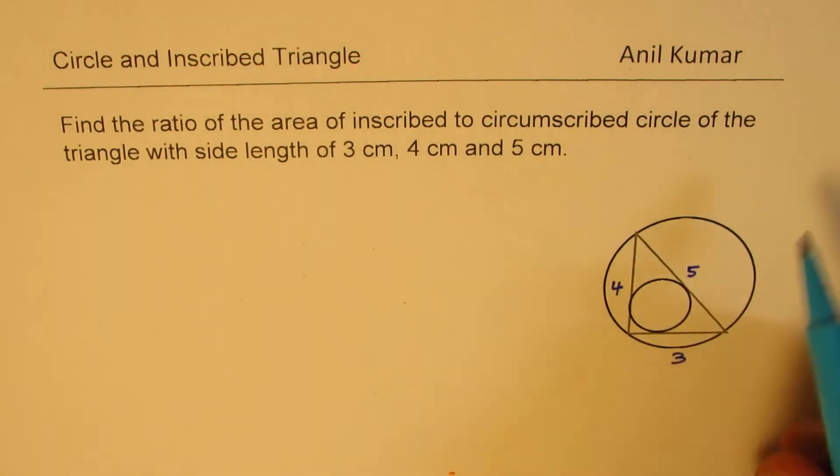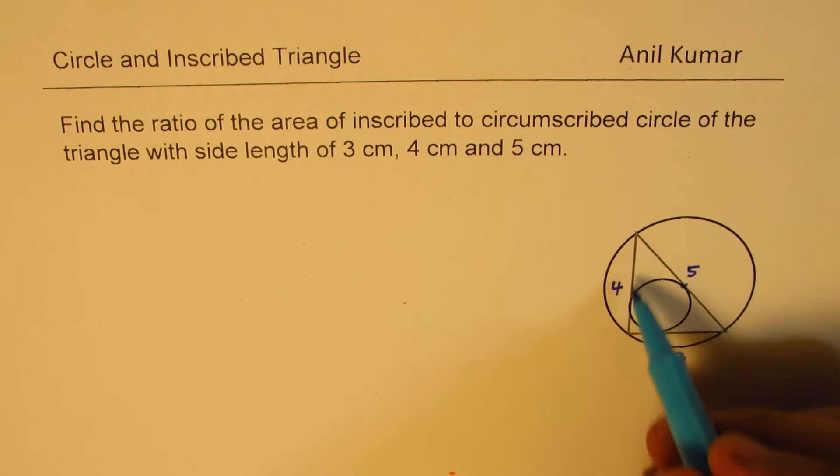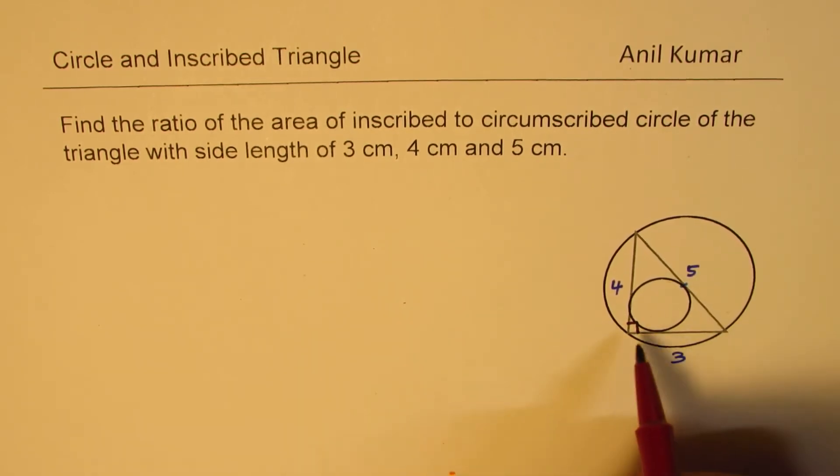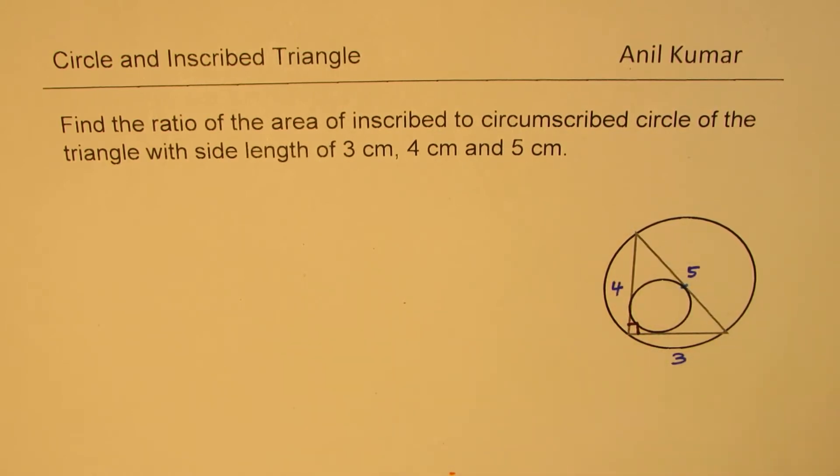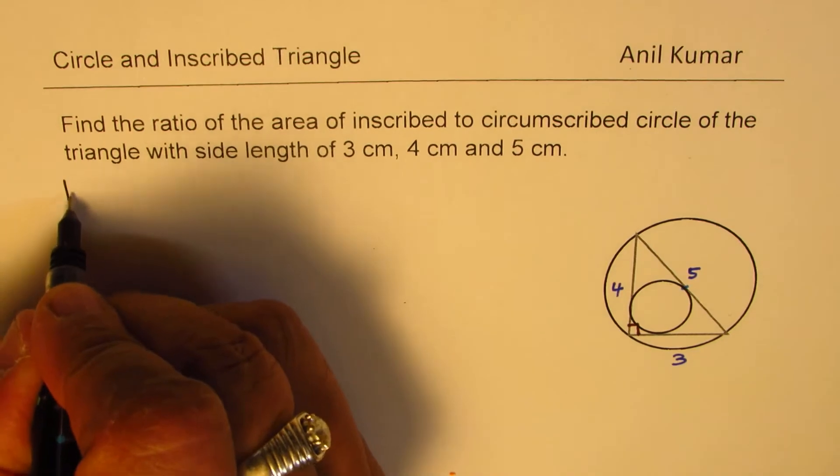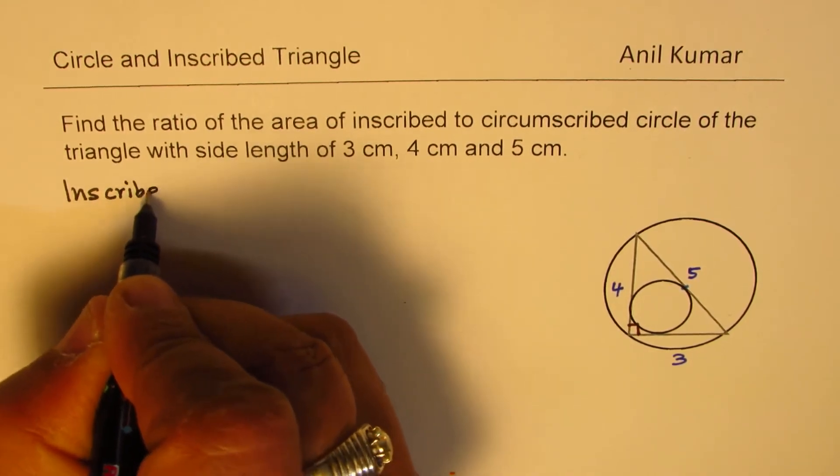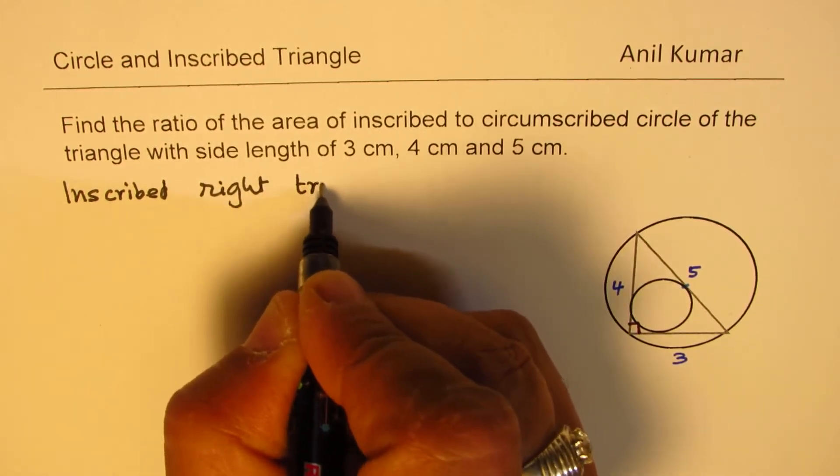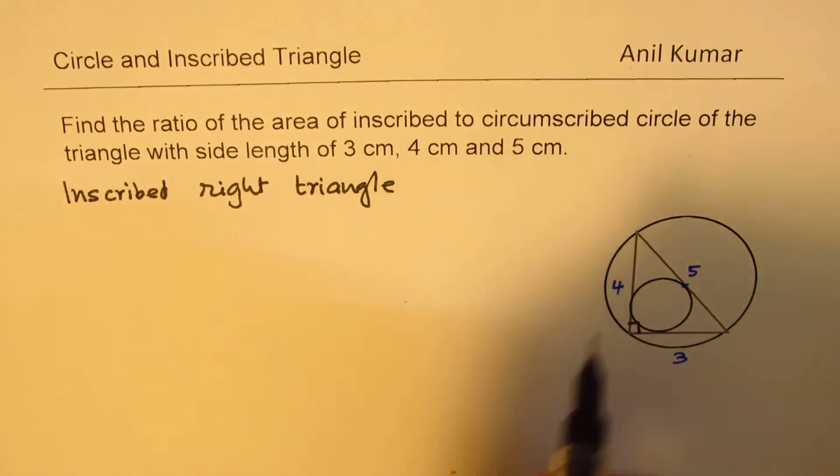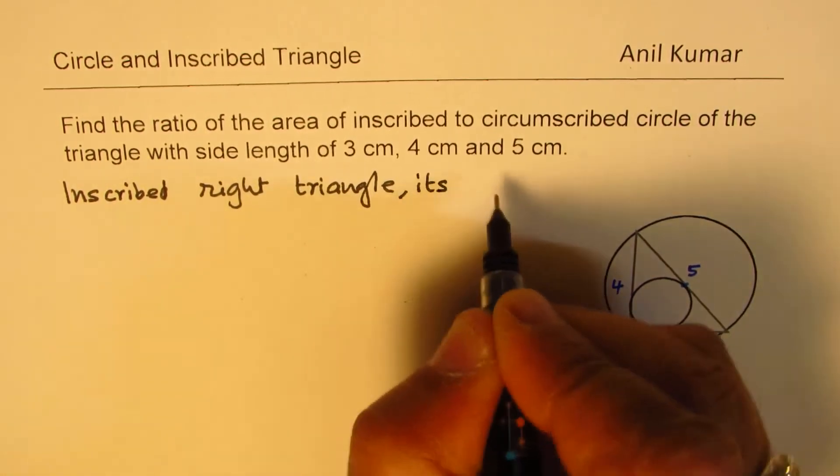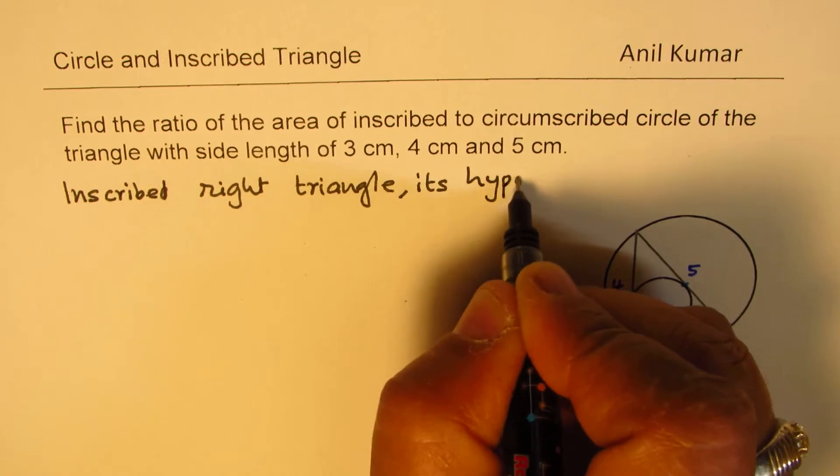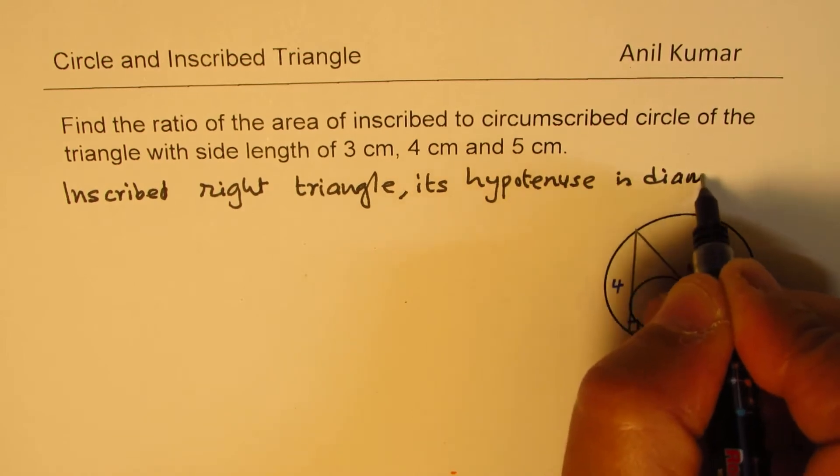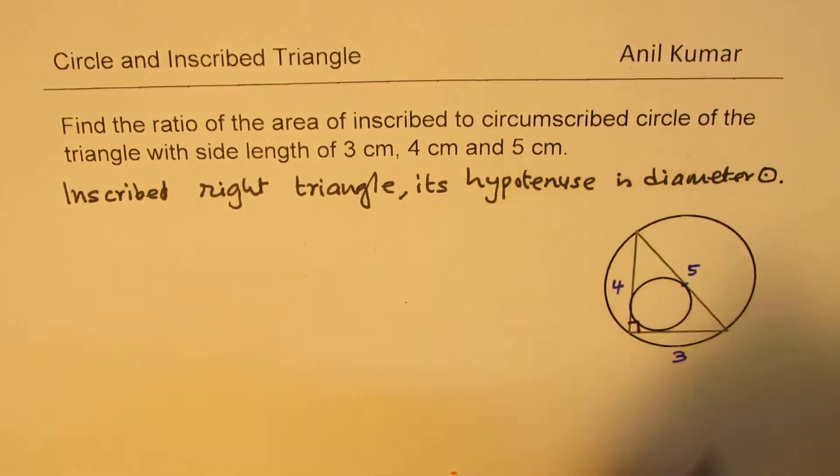As far as the circumscribed circle is concerned, we know that this right angle triangle which is inscribed in a circle should be in a semicircle. So, since we have an inscribed right triangle, its hypotenuse is diameter of the circle.